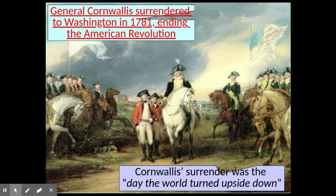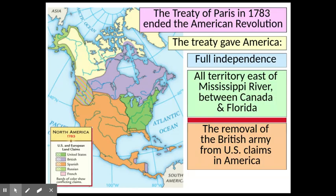General Cornwallis was the losing British commander who surrendered to George Washington. The Treaty of Paris, 1783, officially ended the American Revolution. It gave the United States full independence and, very importantly, all territory east of the Mississippi River between Canada and Florida. The British were supposed to remove their army and personnel from forts in America, but they didn't do that — which contributed to the reasons we would have to fight another war with Britain in 1812.